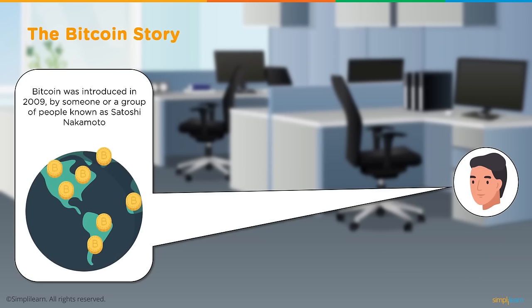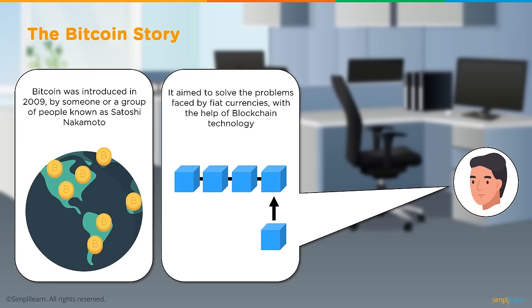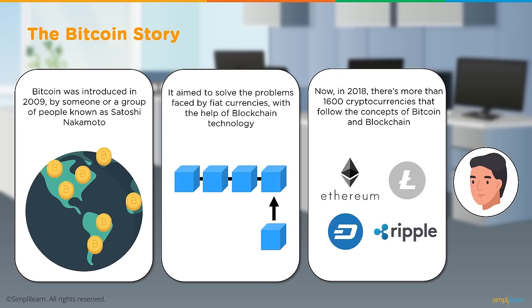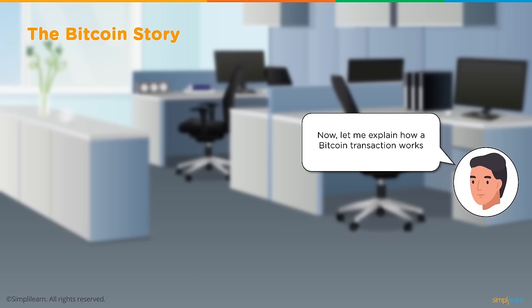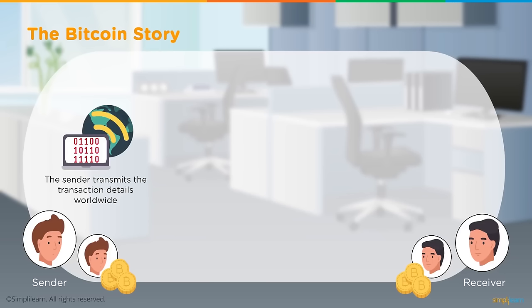Bitcoin was introduced in 2009 by someone or a group of people known as Satoshi Nakamoto, aimed at solving problems faced by fiat currencies using blockchain technology. As of 2018, there are more than 1,600 cryptocurrencies following Bitcoin's concepts — like Ethereum, Litecoin, Dash, and Ripple. When a sender wants to do a Bitcoin transaction, they submit the transaction on the public blockchain network, transmitting it worldwide.